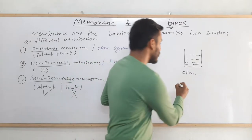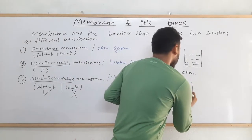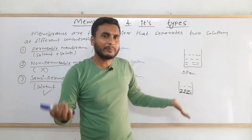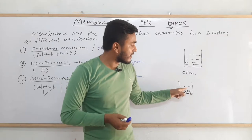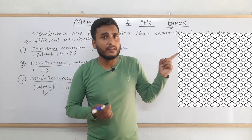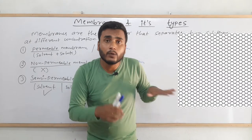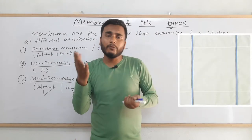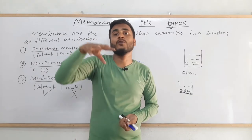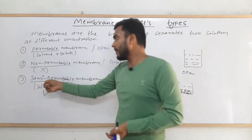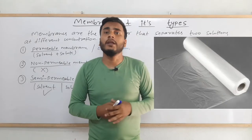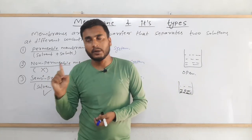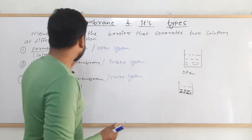For a real-world example, consider a sand and water mixture — a heterogeneous mixture. If we take a net and pour this mixture on it, everything will pass through. That is like permeable membrane. If we take a simple cloth and pour the mixture over it, the sand gets deposited on top and only water molecules pass through. That is like semi-permeable membrane. And if we take a polythene sheet, nothing will pass through — the sand as well as water will get blocked. That is like non-permeable membrane.